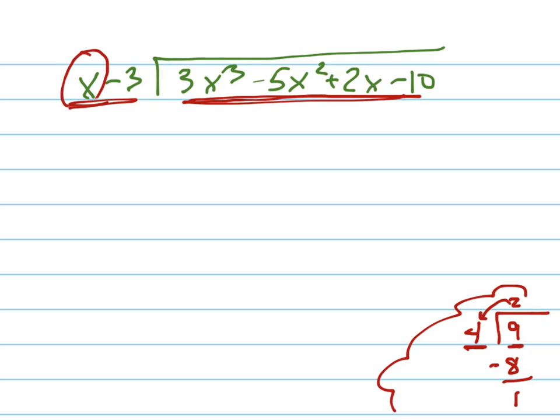I bring down, put a decimal up here, I bring down the 0. Now I say how many times does 4 go into 10? And it goes in there 2 times. I multiply them together and I put that underneath here, and I subtract them, and I continue doing that. That's exactly what we're going to do with polynomial long division, but we're doing it with polynomials.